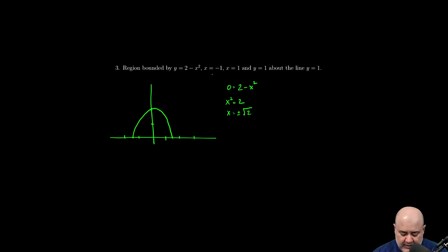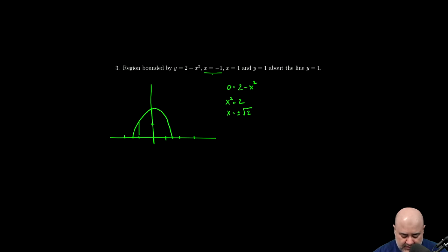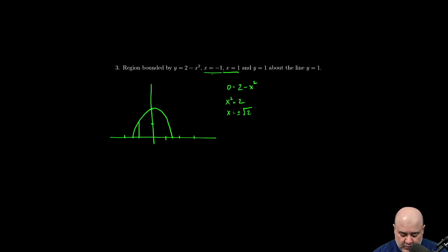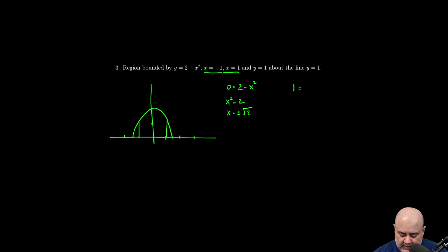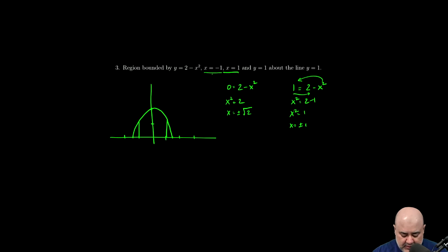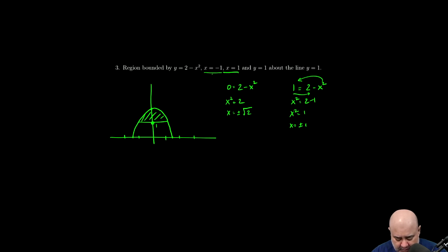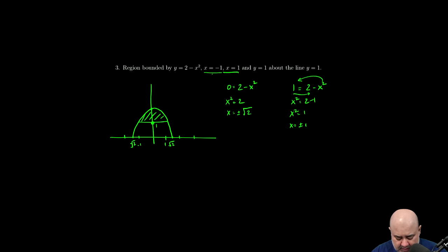I have one boundary at x equals negative 1 and another at x equals 1. Then I have a boundary at y equals 1. Setting y equal to 1 in the function: x squared equals 2 minus 1, so x squared equals 1, which means x equals plus or minus 1. So the line y equals 1 goes through those points, and this is the region we're talking about. The key labels are: root 2, negative root 2, negative 1, 1, y = 1, and y = 2.